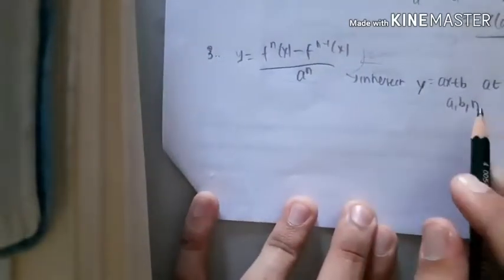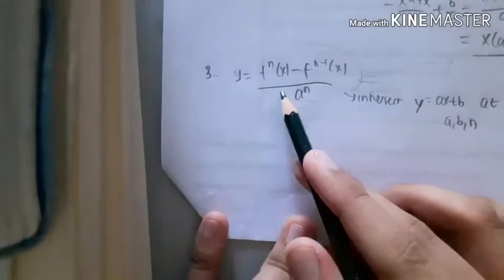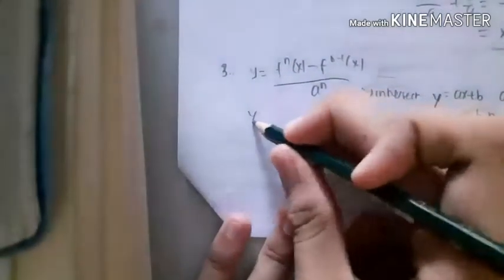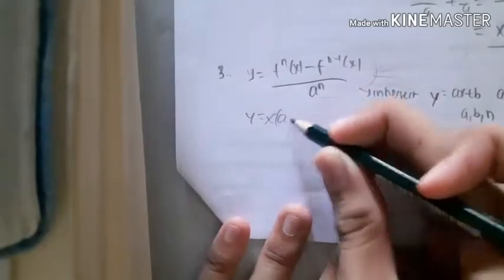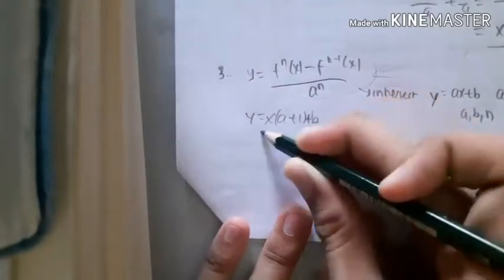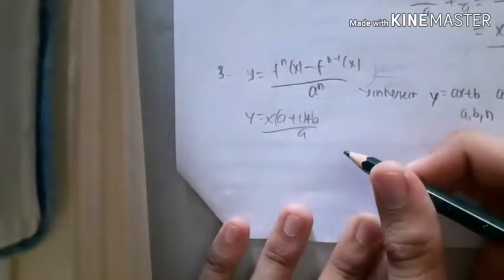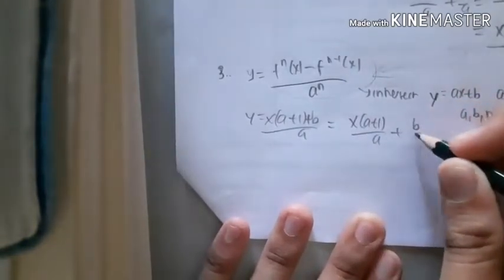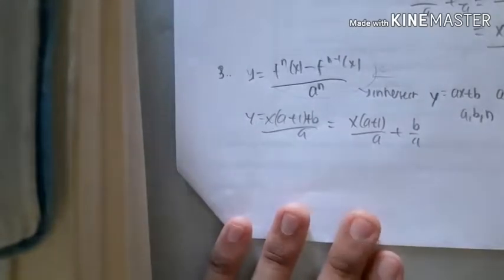So we can actually substitute this with that. So y is x of a plus 1 plus b over a, and we can separate that.